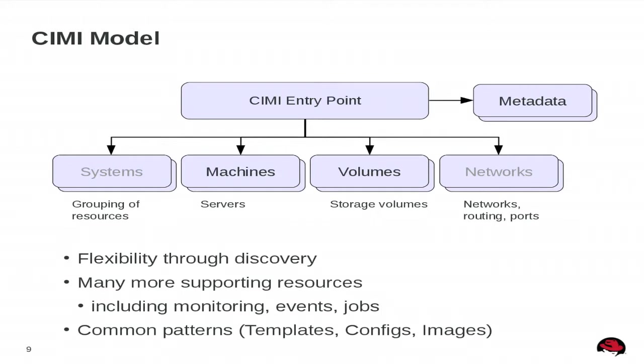CIMI is designed to be very flexible about what providers support — pretty much anything in CIMI is optional. The standard is about 200 pages, but most of it is reference material. If you read the first ten pages, you're pretty much good to go, and there's also a primer I'd recommend starting with. For discoverability, there's a metadata notion so you can indicate, for example, whether you can inject user data when creating a machine, or whether machines start in a stopped or started state — all discoverable so clients can adapt to those variations.